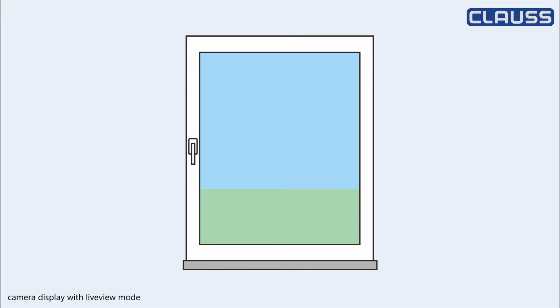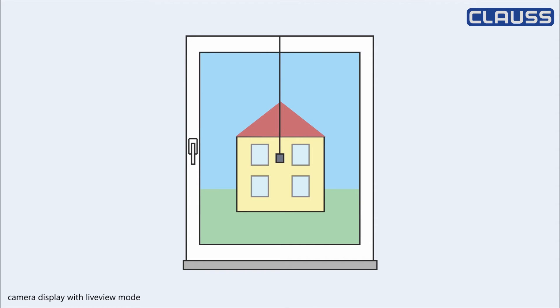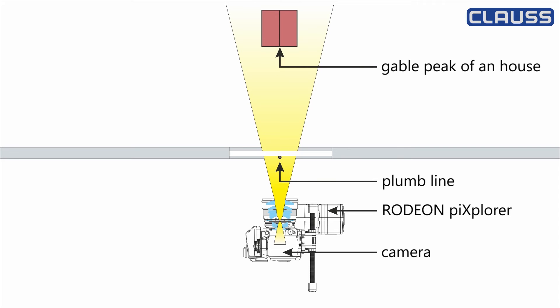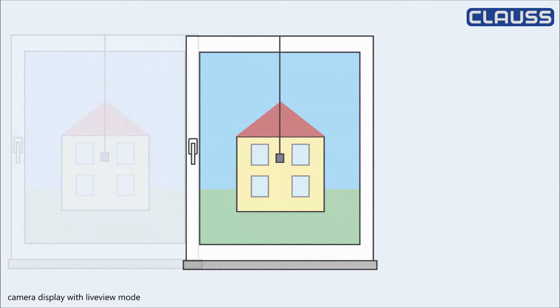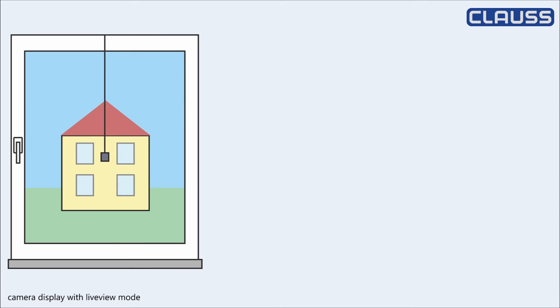Hang a plumb line at a window frame as the near object. For the far object you could use the gable peak of a house. The illustration looks like this from above. Then you have to move the tripod so that both objects are near the left image border and they should be seen exactly on top of each other.